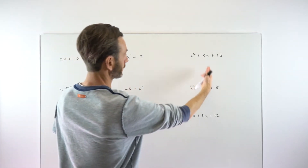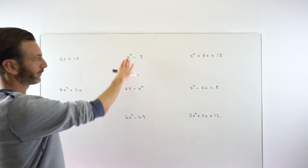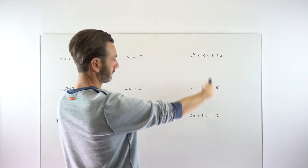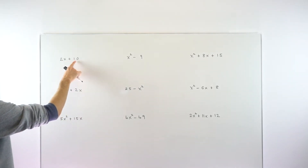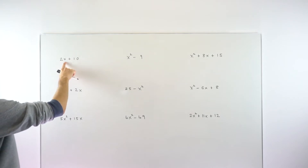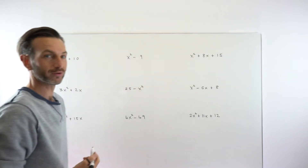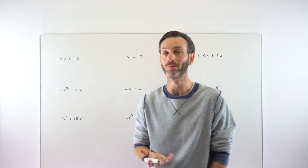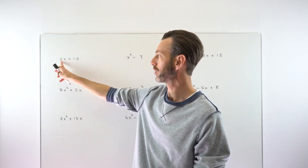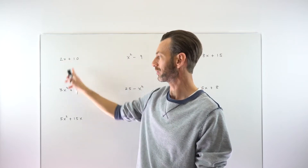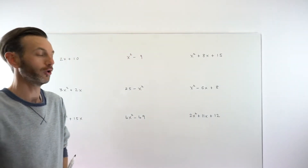Even if you've got things that look like the other types, still look for a common factor first because you would want to do the common factor before you get to the technique for the other types. A common factor means that within the terms in your expression, there is a common term — either a letter like x, or a number that divides into the numbers in each term. Sometimes it's a number, sometimes a letter, sometimes a combination of both. Usually common factor questions involve only two terms.